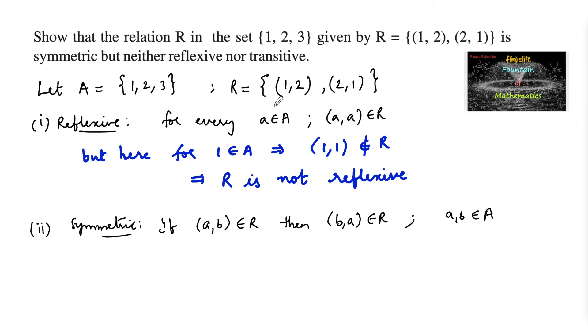So here we can see that (1,2) and (2,1) exist. For (1,2) belongs to the relation, which implies (2,1) also belongs to the relation, or (2,1) belongs to the relation, which implies (1,2) belongs to the relation. So from this we can say that this relation R is symmetric.